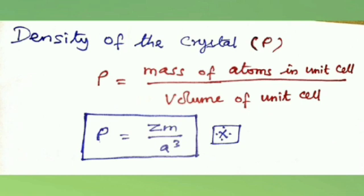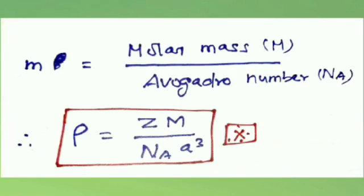Where Z is the number of atoms in the unit cell, m is the mass of one atom, and a is the edge length. Remember, m equals molar mass M divided by Avogadro's number Na. Therefore, the density formula becomes rho equals ZM divided by Na times a cubed. Use the first formula when you have mass of atom, and the second formula when you have molar mass.